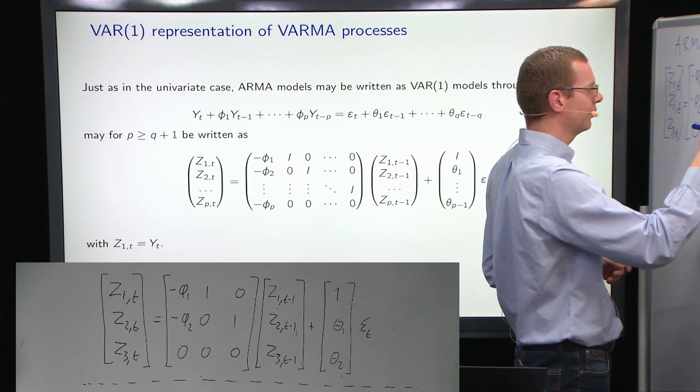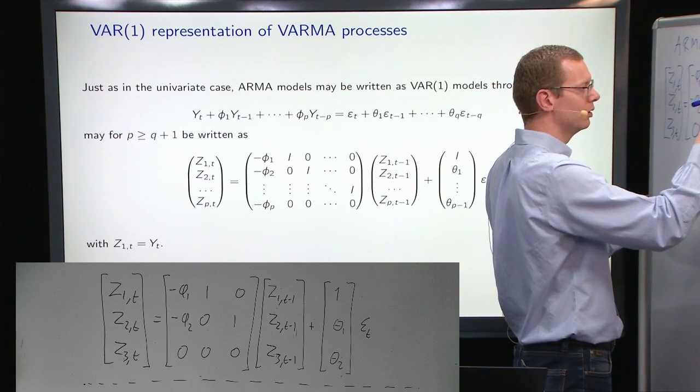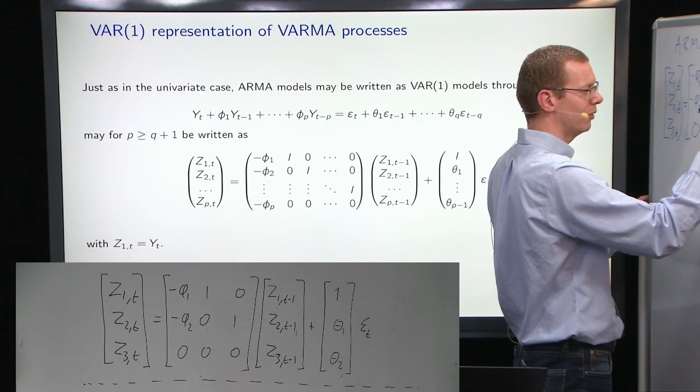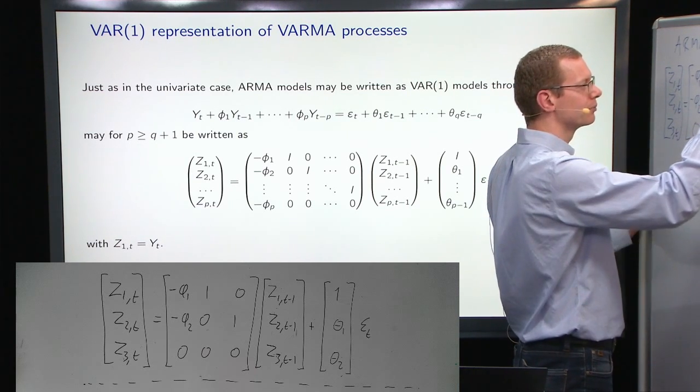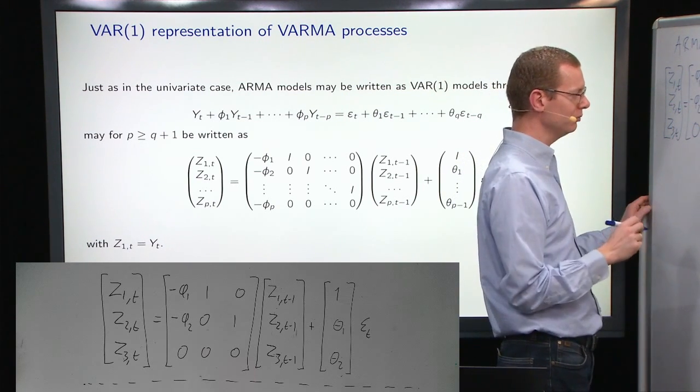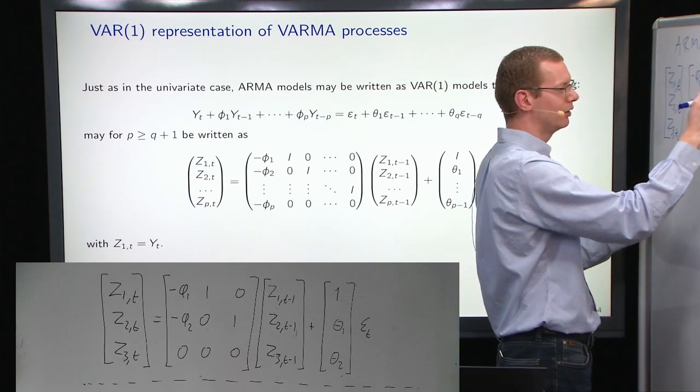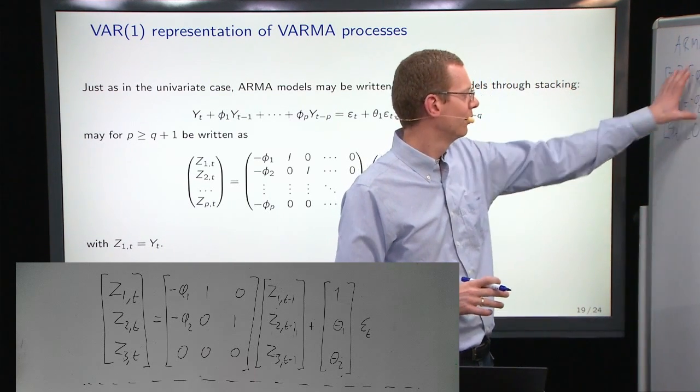Then, we have to multiply this on z1,t-1, z2,t-1, and z3,t-1. And in the rest of the matrix here, we should have a row of zeros at the bottom, and then we should have the identity matrix of dimension n-1 in there.